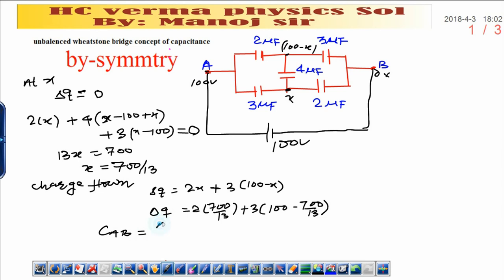Net capacity means total charge thrown through the circuit divided by total potential difference. Total potential difference is 100 volt. If you put all these values: 2 into 700 upon 13 plus 3 into 100 minus 700 upon 13, whole divided by 100.